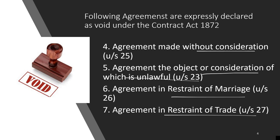Next: agreement made without consideration under Section 25. No consideration means no contract — agreements without consideration are null and void. Next: agreement where the object or consideration is unlawful. If either the object or consideration, or both, is unlawful, the agreement also becomes null and void.